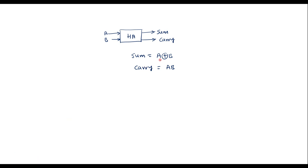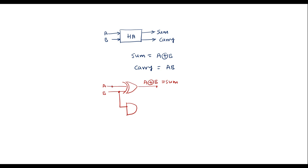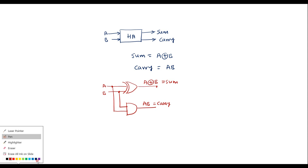Now let me draw the circuit. We have A XOR B, so I will take one XOR gate. This is A input and this is B input. The output of this XOR gate is A XOR B, which is nothing but sum. Similarly, carry is equal to A AND B. To perform A AND B I need one AND gate. One input is B and another input is A, so the output here is A AND B which is equal to carry.